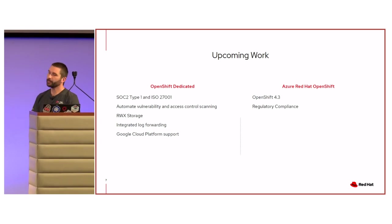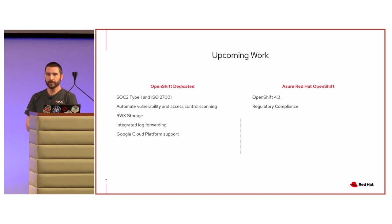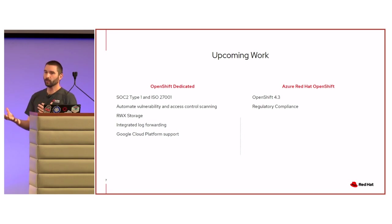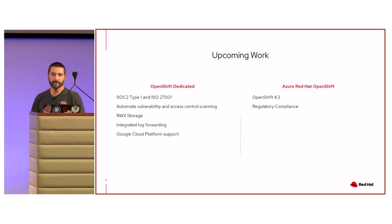Here are a few highlights of upcoming work for both OpenShift Dedicated and ARO. SOC 2 Type 1 and ISO 27000 — we're wrapping those up, so if you're interested in those compliance certifications, we'll have them very soon. Similarly on the ARO side, we're wrapping up initial regulatory compliance, which will also include those SOC and ISO certifications. We do vulnerability and access control scans today but they're manual, so the team is creating a whole automated process to constantly and regularly run these vulnerability and access control scans.